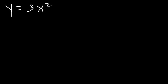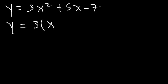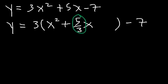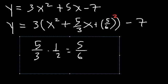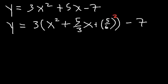Now let's try one last, more challenging example: y is equal to 3x squared plus 5x minus 7. Let's complete the square first. Take out the 3: 3x squared divided by 3 is x squared, and 5x divided by 3 is 5 over 3 times x. Leave a space, then minus 7. What is half of 5 over 3? Multiplying 5 over 3 by one-half gives 5 over 6. So this is going to be plus 5 over 6, squared. Since we added 5 over 6 squared times 3 to the right side, we need to subtract 3 times 5 over 6 squared.